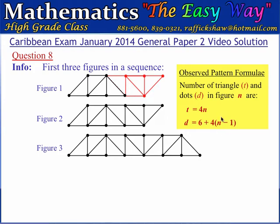When N is 2, the bracketed term becomes 2 minus 1, which is 1, so we have 6 dots in the first figure plus 4 in the second figure, giving a total of 10 dots. When N is 3, the bracketed term becomes 2, meaning we're adding 4 dots twice. We can reduce that formula to the simpler form 4N plus 2, so the formula for the number of dots in figure number N is 4N + 2.